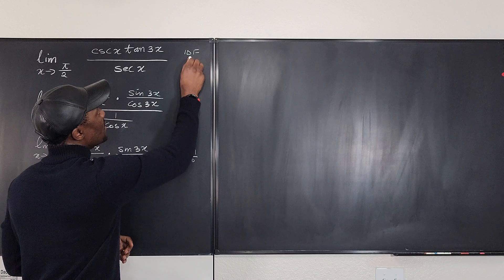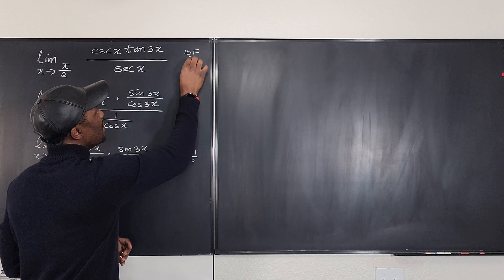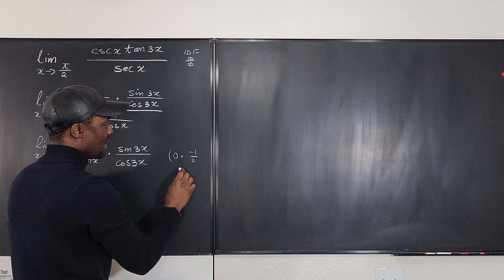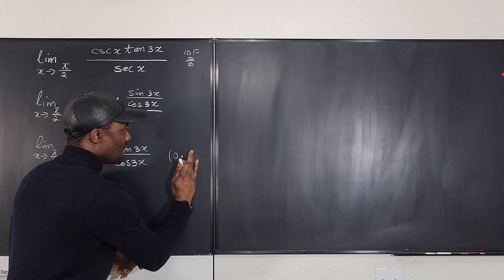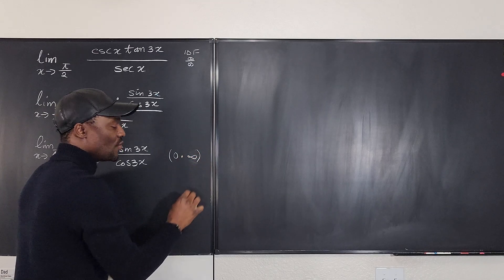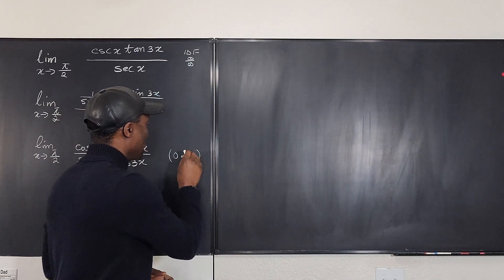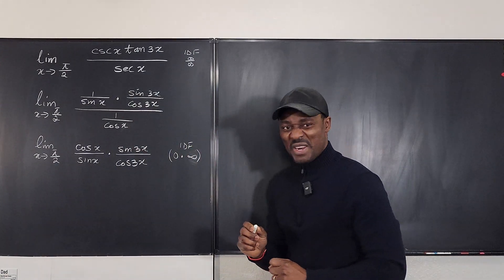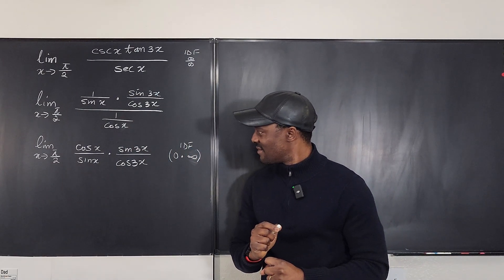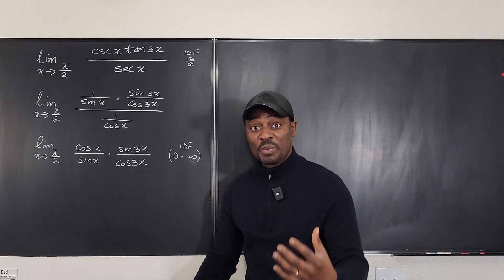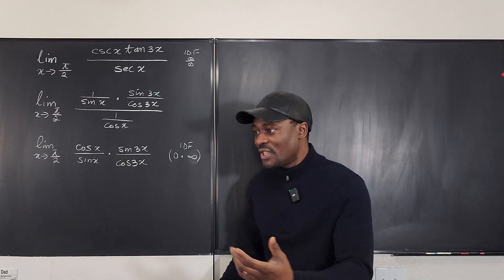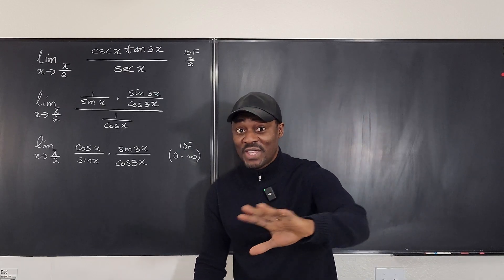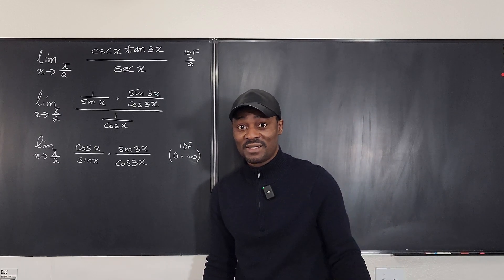The original was infinity over infinity, and now this gives 0 times infinity — also an indeterminate form. You cannot use L'Hôpital's rule at this point. For those who think L'Hôpital's rule will always save you: you still have to do your simplification, because until you get 0/0 or ∞/∞ in proper form, your answer will be incorrect.